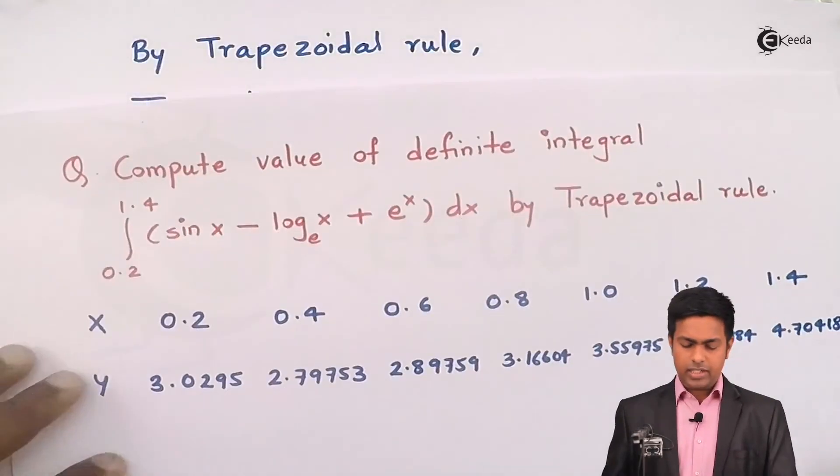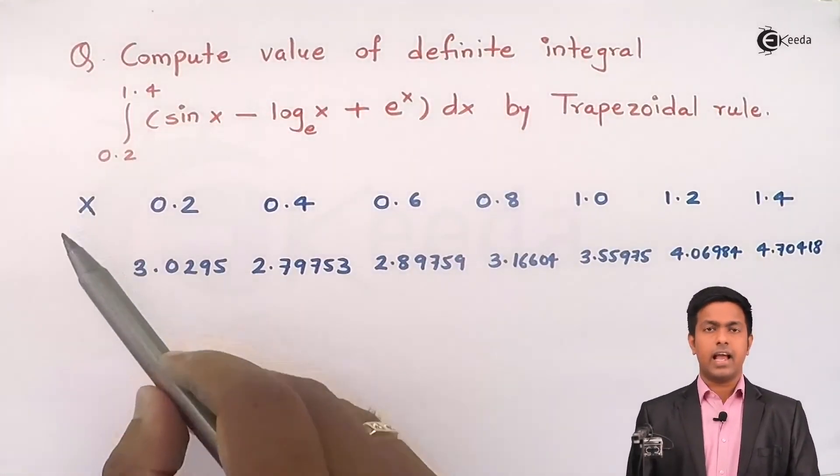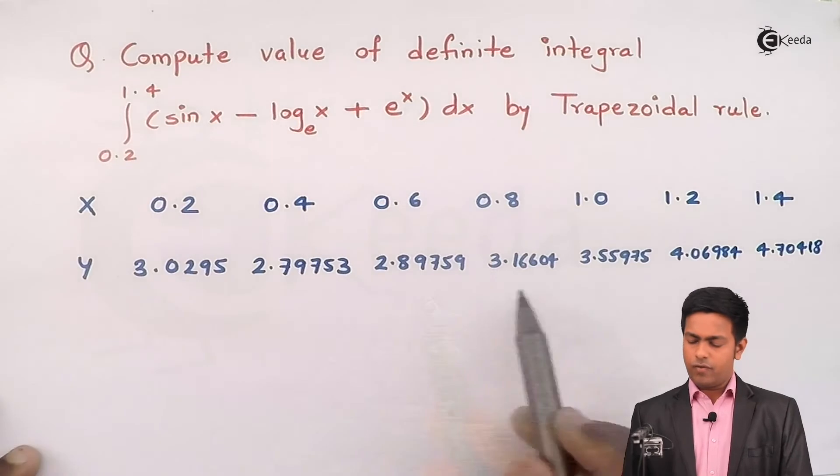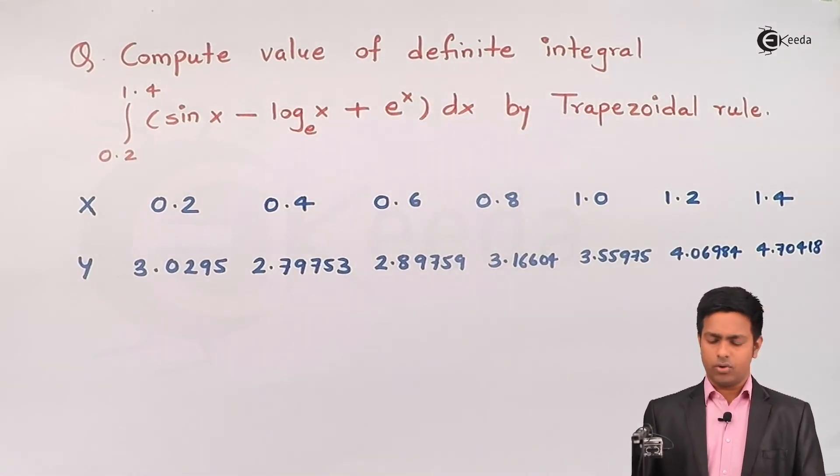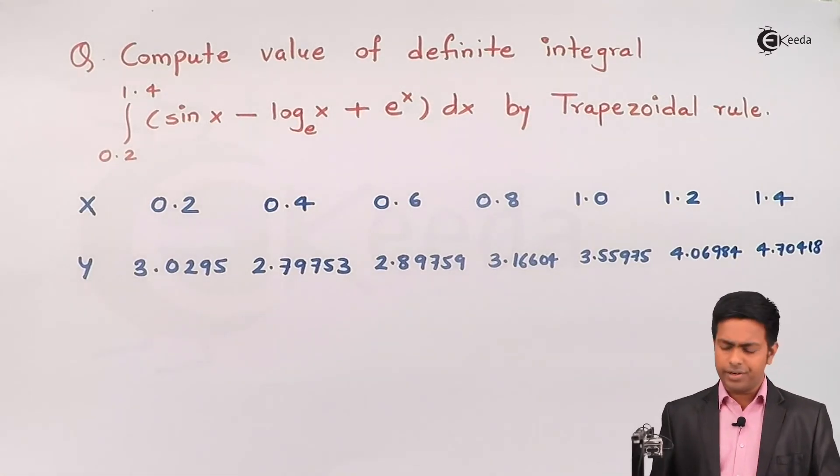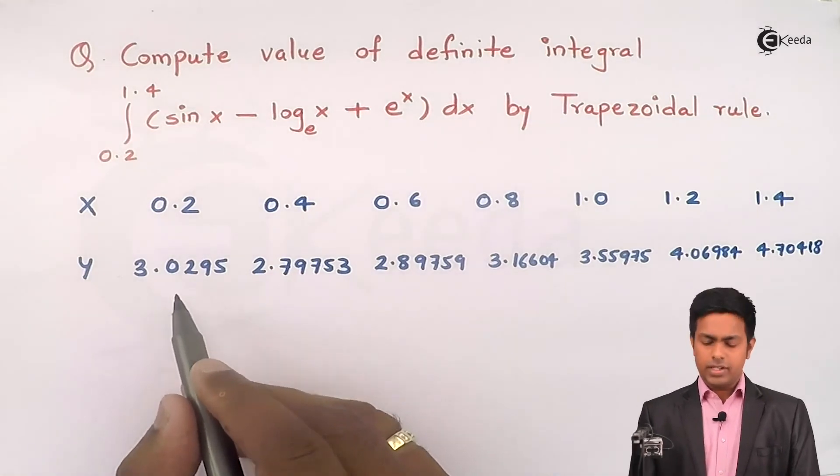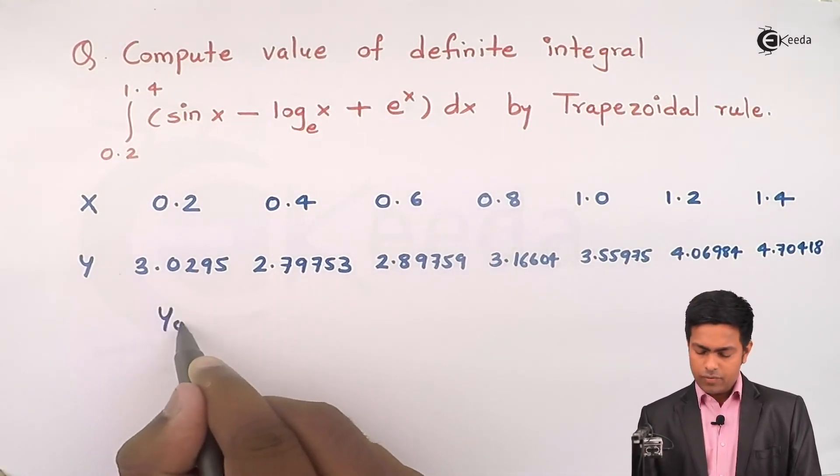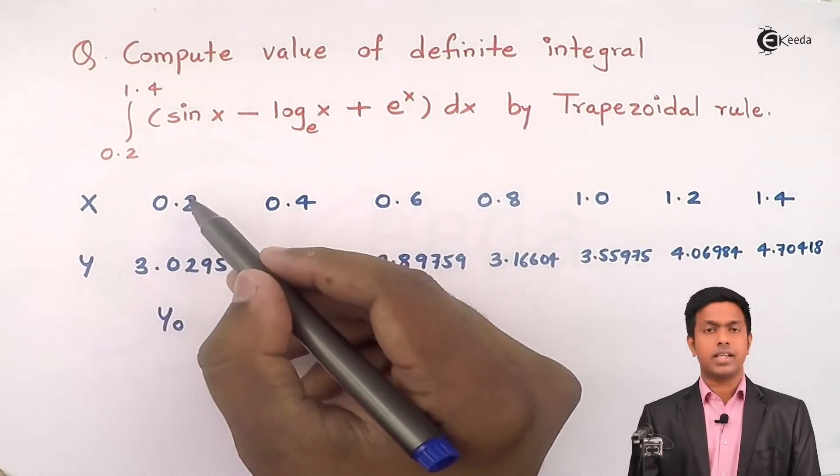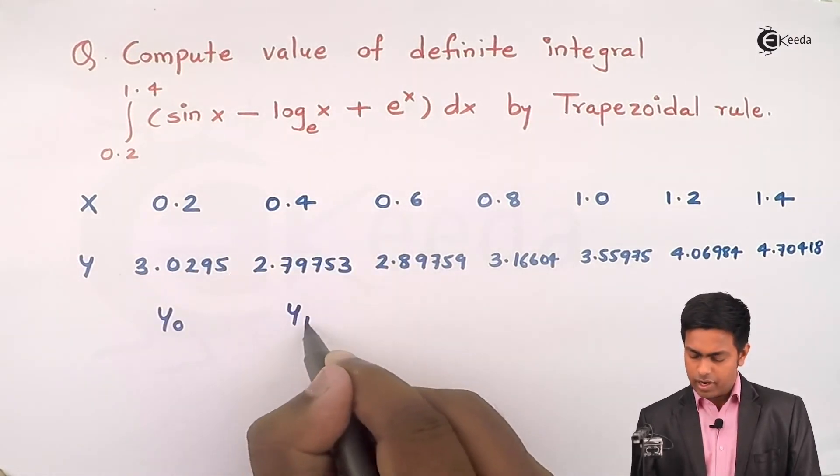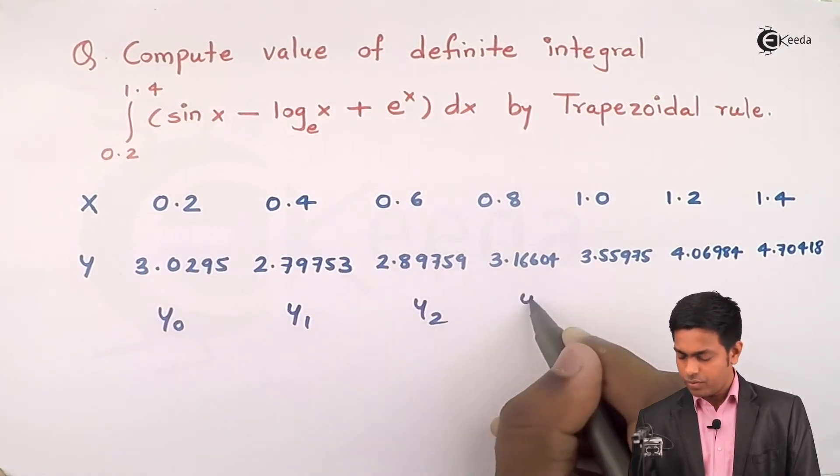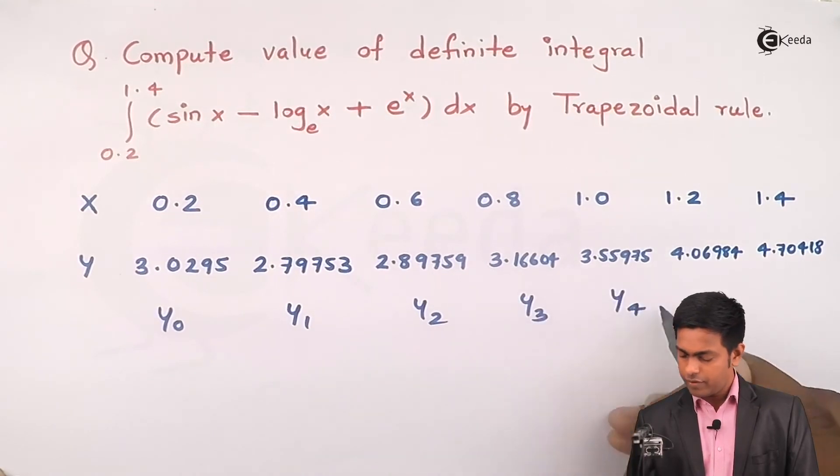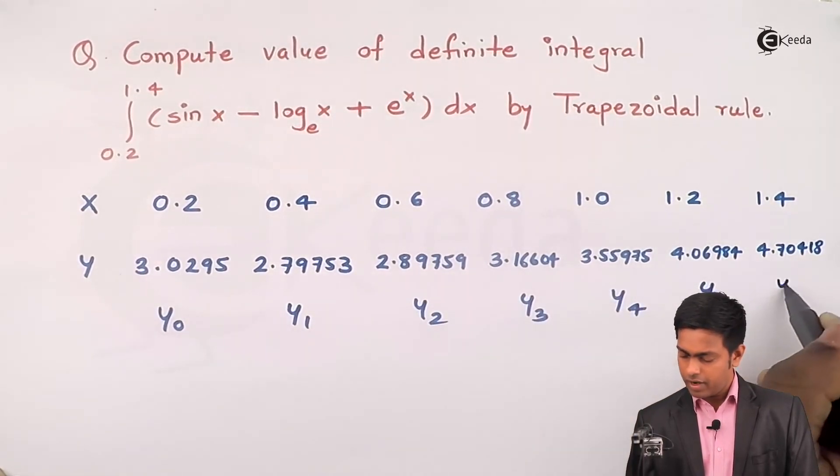Now here as we got the value of x and y, the value of y we'll call it as ordinate, or we generally call it as ordinate. So we'll say this first value as y0 which will be the value corresponding to this x0, then this will be y1, y2, y3, y4, y5, and y6.